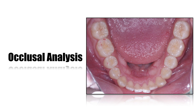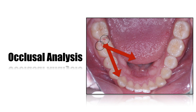Let's look at an occlusal view of the same patient. We can observe only two contacts: the strongest one located on the distal incline of the distal lingual cusp, and the other located on the buccal incline of the distal buccal cusp. The distal incline pushes the mandible forward, and the buccal incline moves it slightly to the left, as observed on the previous photos.